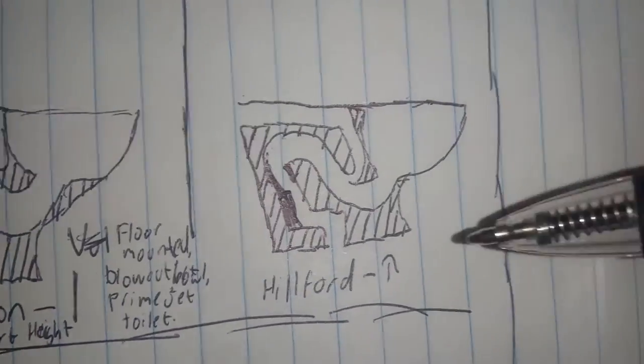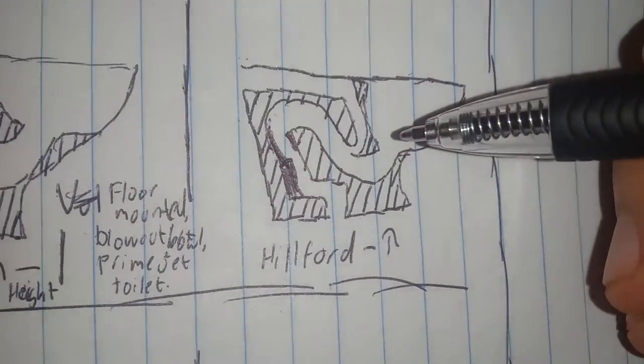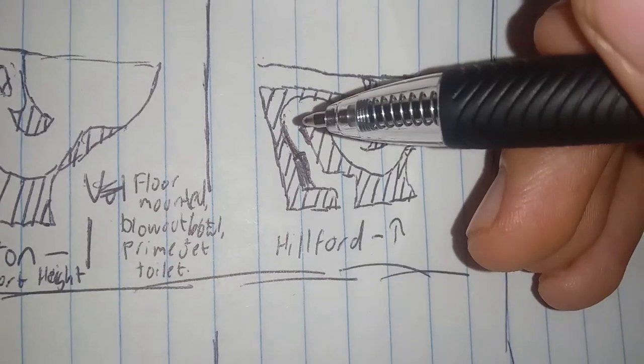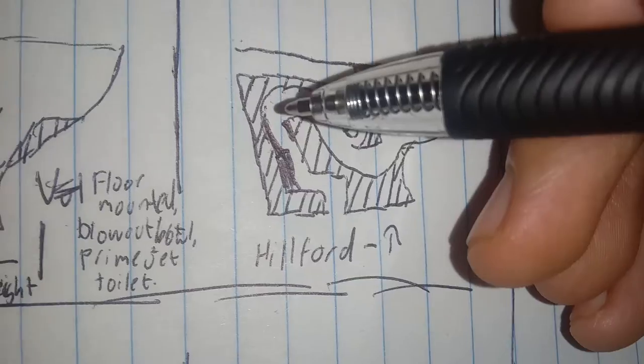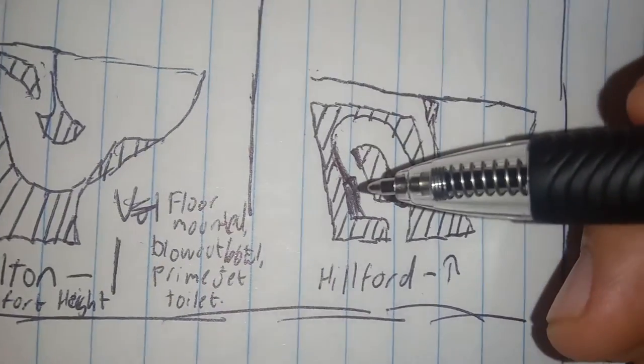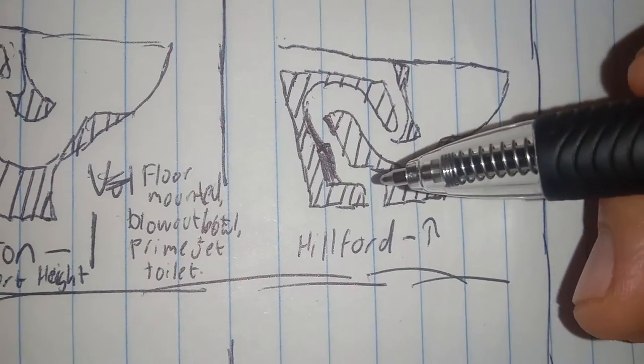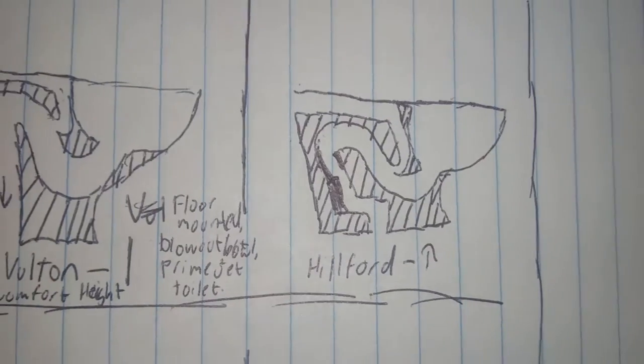And this right here is the Mulford. This is the siphon jet floor mount. When it goes up, it goes through these bends, and as you notice it gets smaller, so the water can fill up faster, then it goes down in there and then it just goes out.